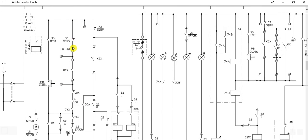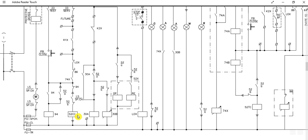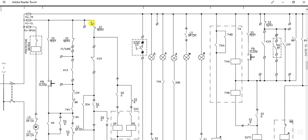This is the service position path. If the breaker is in service position, this path will be followed. Q1X is the interposing relay auxiliary contact. If you give a close command from DCS or PLC, the K1X contact will be closed, and the path will go through to energize the closing coil of the circuit breaker.